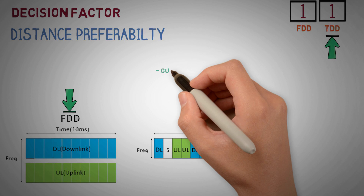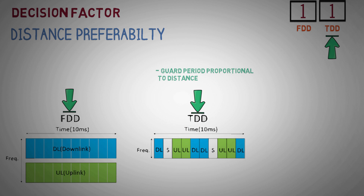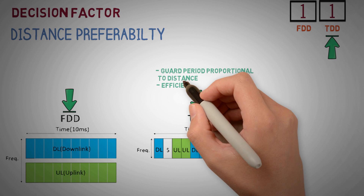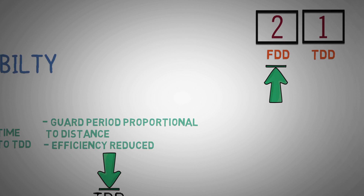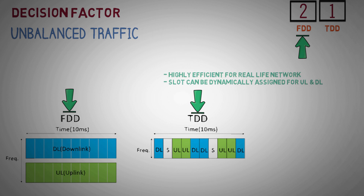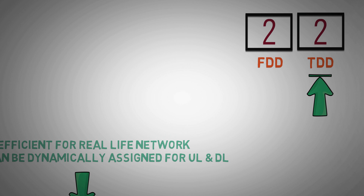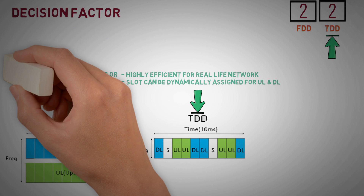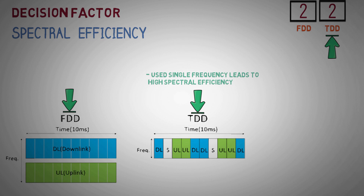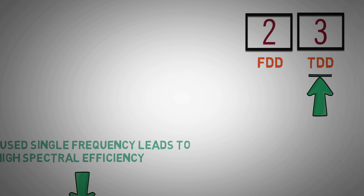Distance preferability: as the distance increases, the guard period also increases in TDD because point-to-point signal propagation time increases. The increased guard period significantly affects efficiency, whereas FDD does not have a problem with small or large distances. Unbalanced traffic: in real-life networks, the volume consumed in downlink is much higher than in uplink. In TDD it is possible to dynamically adjust capacity by utilizing more time slots for downlink than uplink, whereas in FDD the capacity is normally balanced in both directions. Spectral efficiency: TDD uses only one frequency whereas FDD uses two different frequencies, so spectral efficiency in FDD is not as good as TDD.